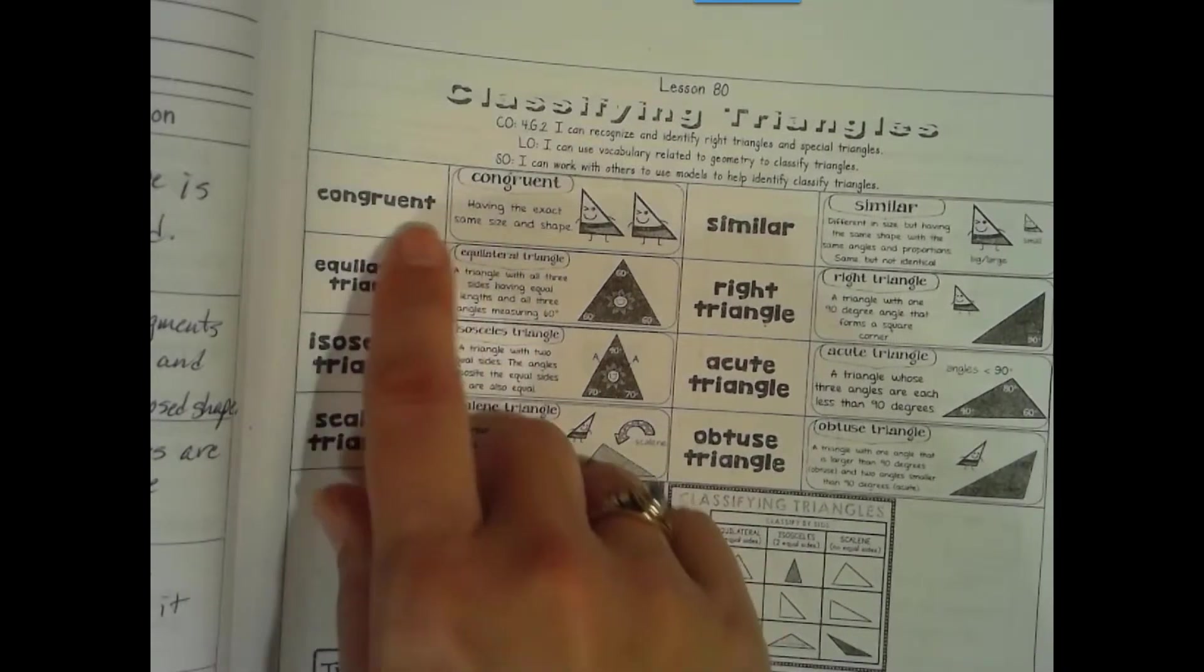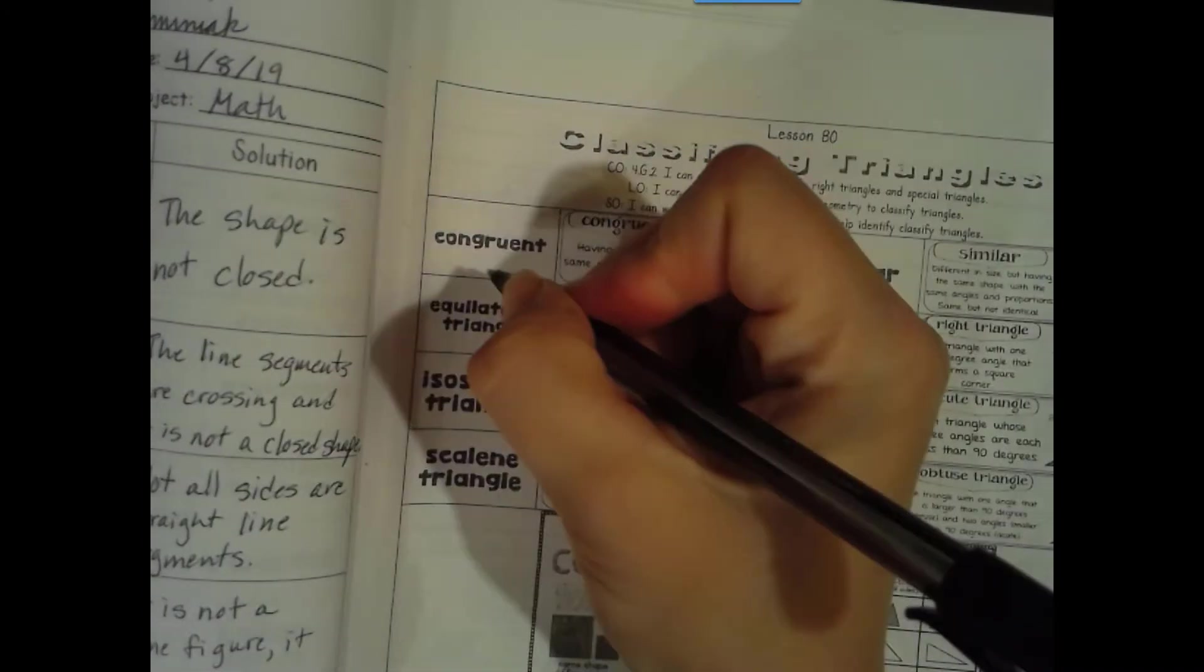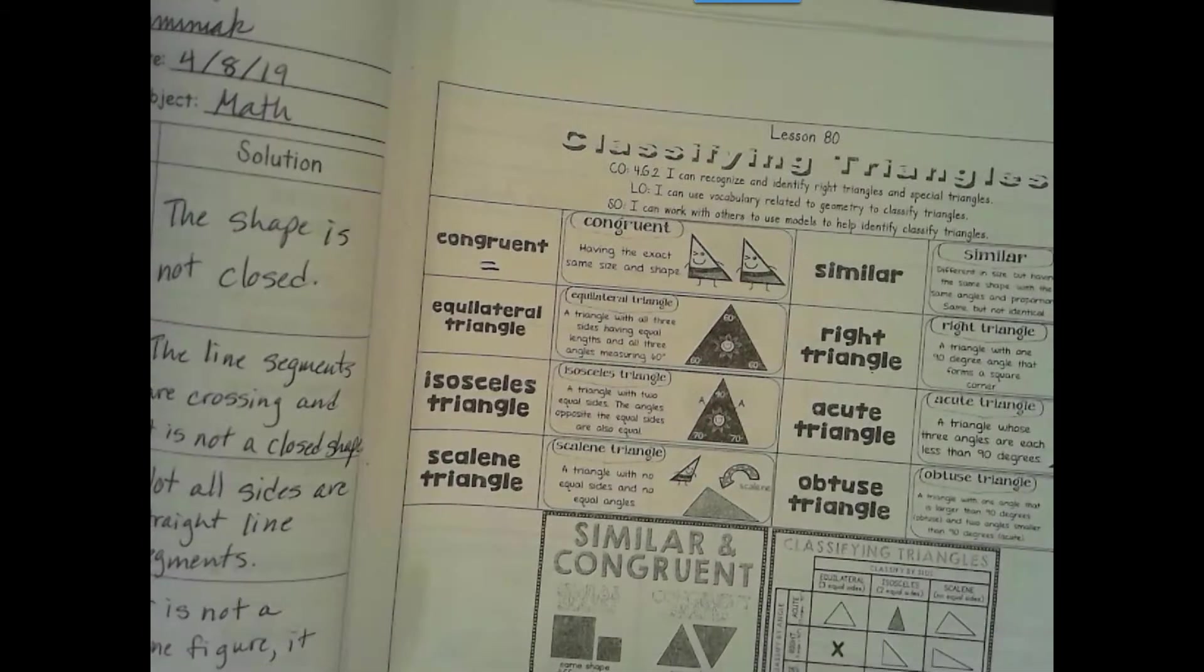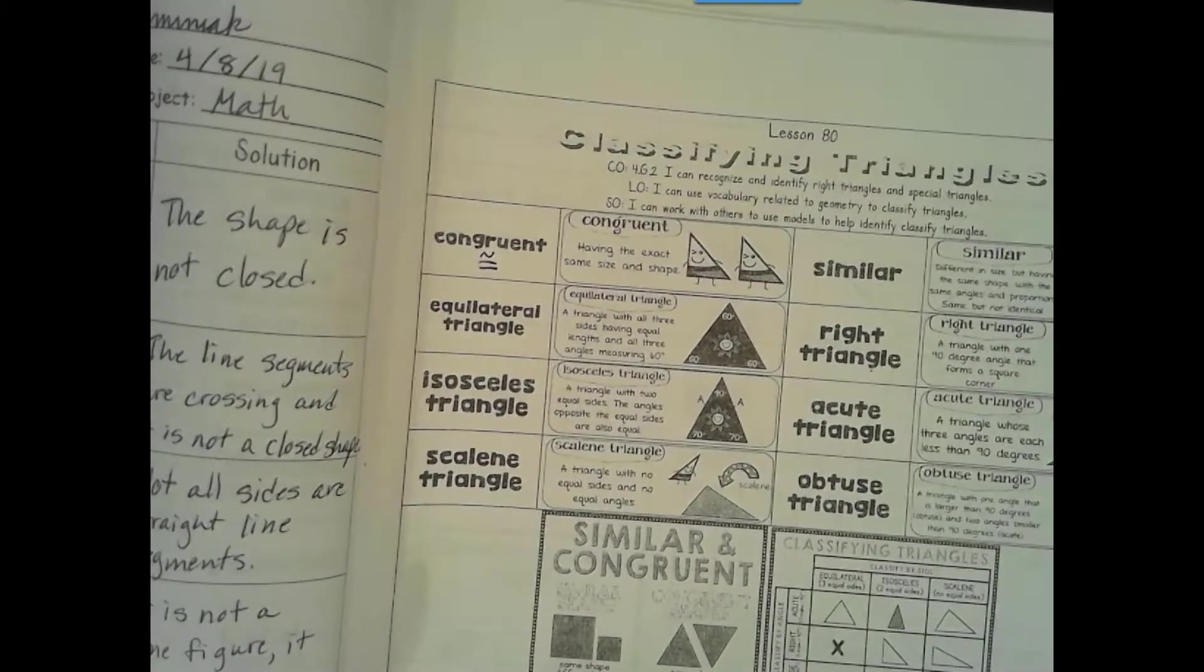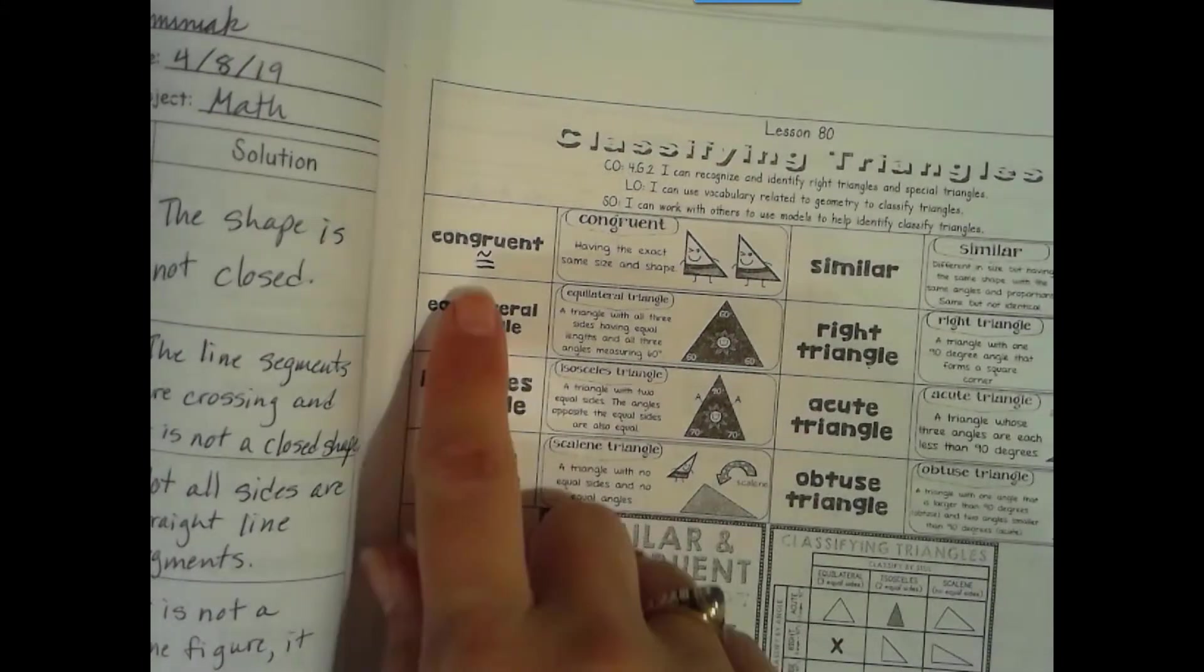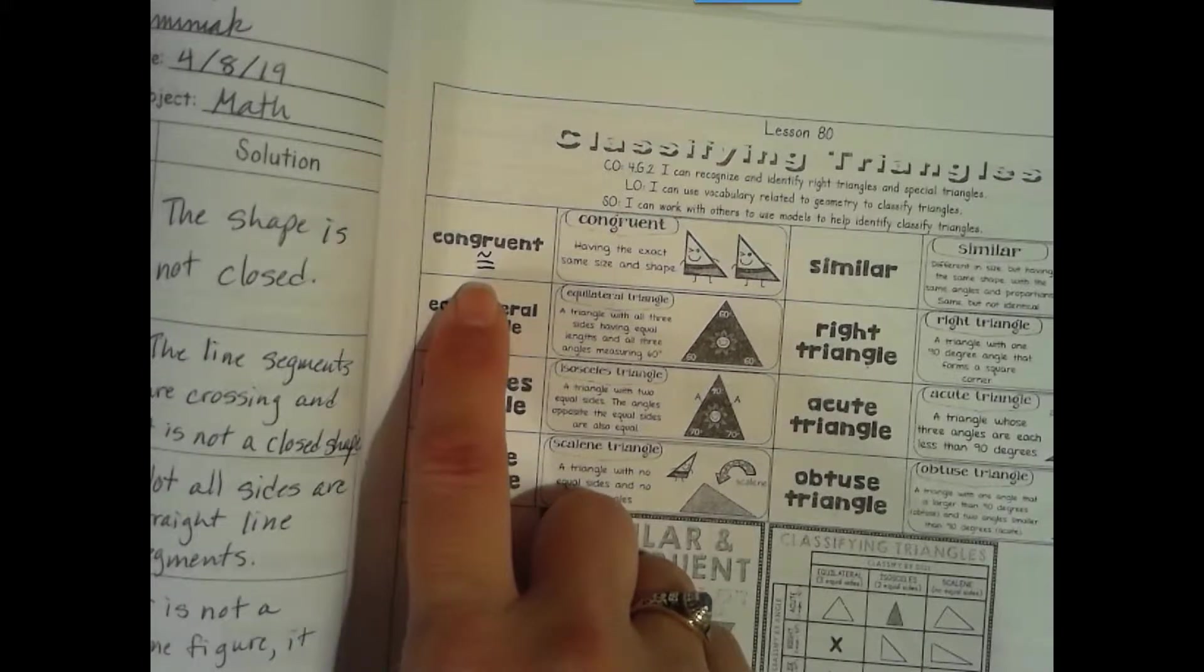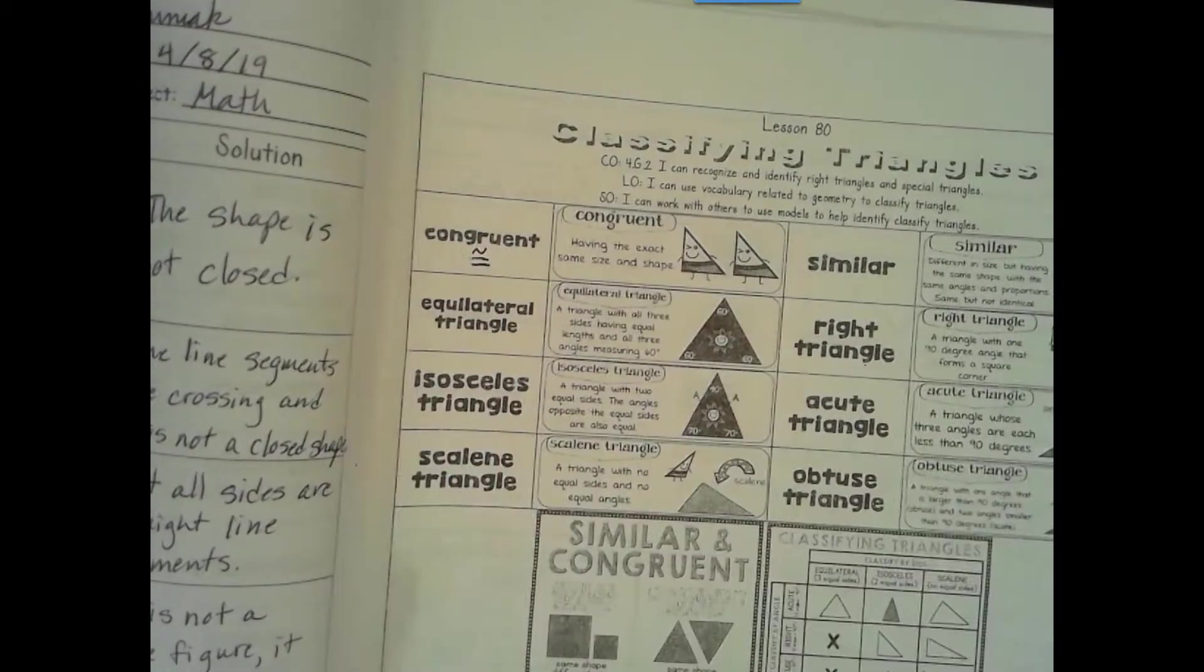So this is similar to the word equal and actually has a similar symbol to equal. That would be an equal sign and then congruent has a little tilde on top. So congruent shows that it has an equal size and an equal shape. Congruent and equal are similar, not exactly the same but they are similar.